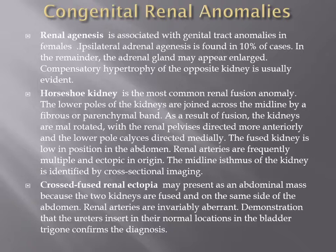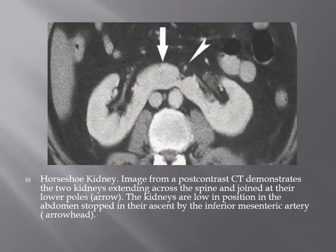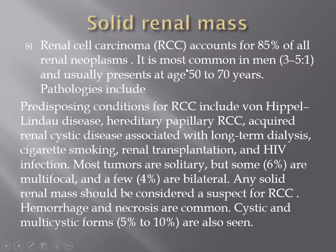Horseshoe kidney carries about a 40% higher risk of Wilms' tumor than other kidney anomalies. In cross-fused ectopia, the ureter inserts into the normal location in the bladder trigone confirming the diagnosis. When reporting horseshoe kidney, it is important to state whether the kidneys are connected by renal parenchyma or fibrous tissue, as this influences surgical planning.